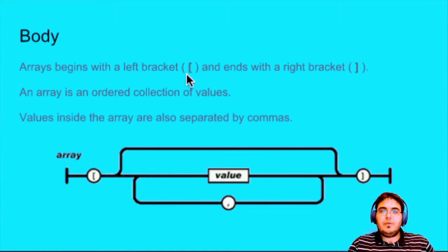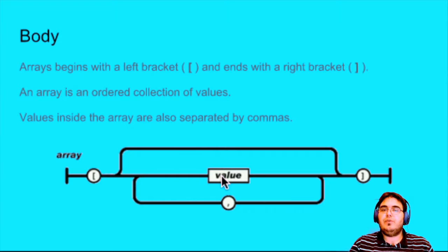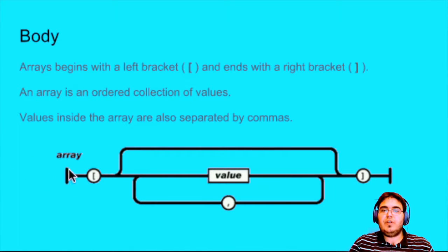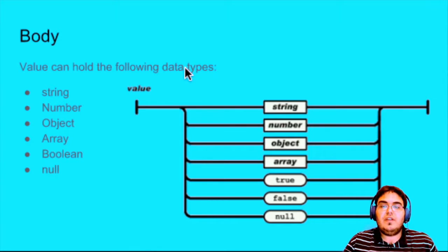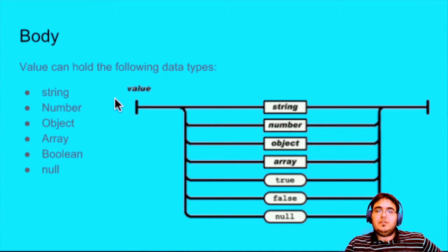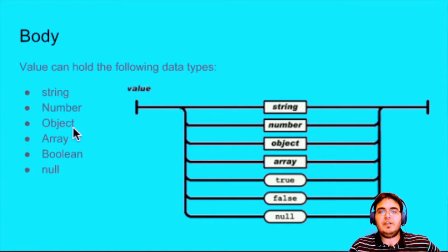Arrays start with a left bracket and end with a right bracket. We can have arrays in our JSON file. We have the name with the colon, then we start the array and include the values each separated by a comma, and when we end the array we put the closing bracket. If we have another member there's a comma, and then we have more members. The values can be the following types: strings, numbers, objects.